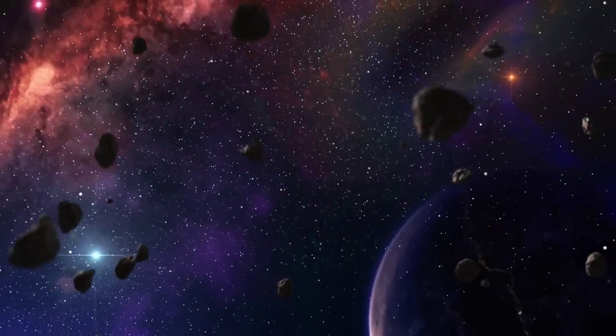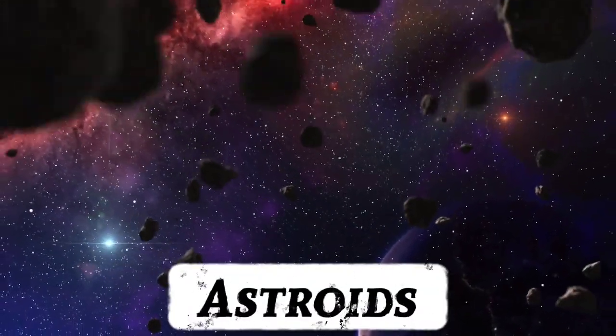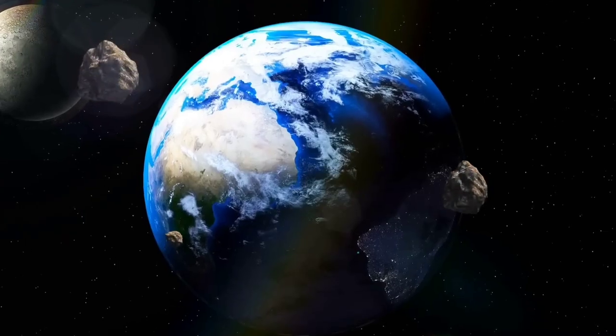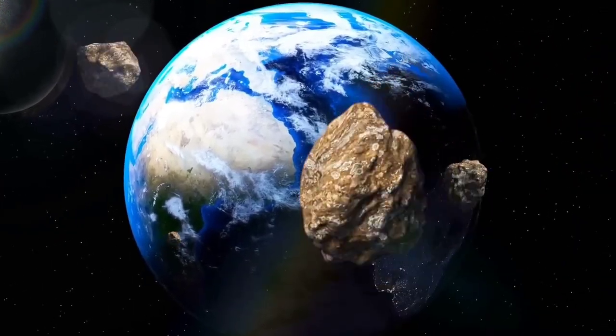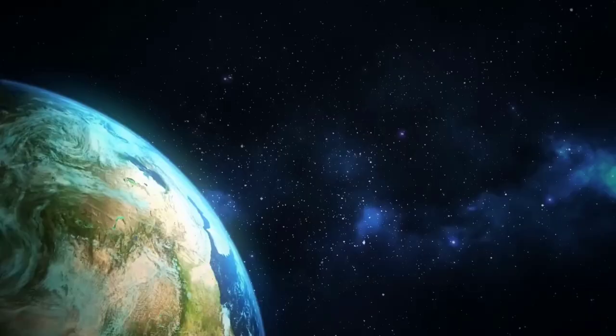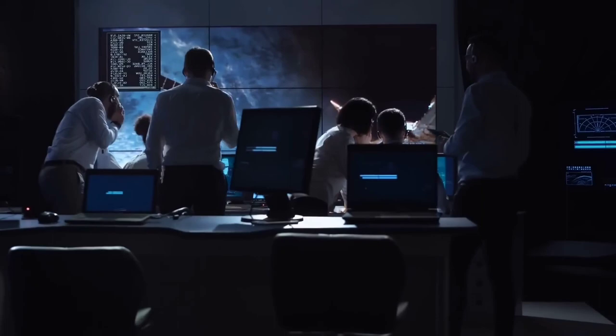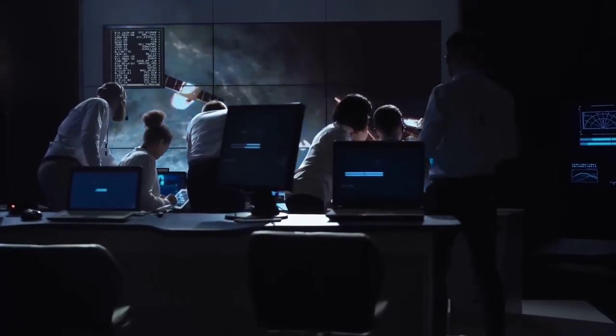Until today, we could only observe asteroids moving in space. We could make predictions about their path and speed, and if an asteroid was approaching Earth at a high speed, the most we could do was estimate when and where it might collide with our planet. However, we had no power to control these events.